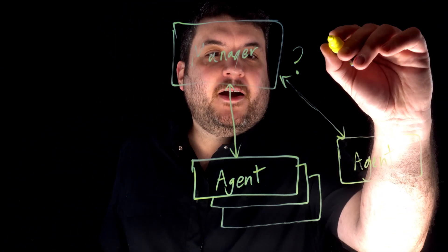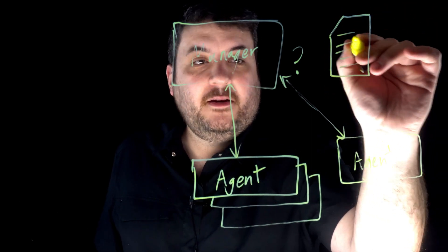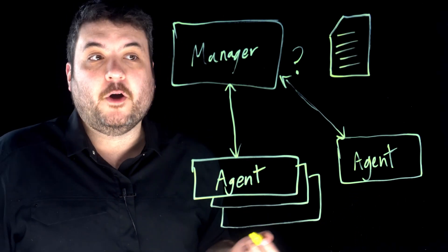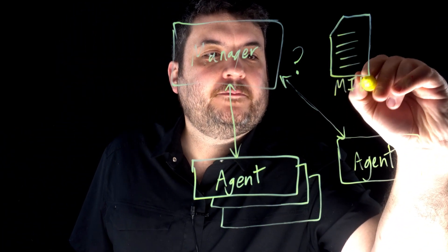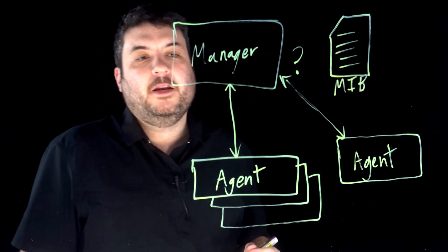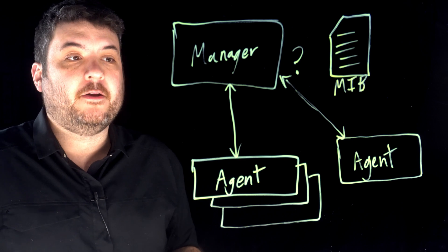Well, that's what the MIB file is. The MIB is actually a plain text file. It's an ASN.1 notation and it contains all the instructions that the manager is going to need to resolve all those questions about what this device can do and how to talk to it.